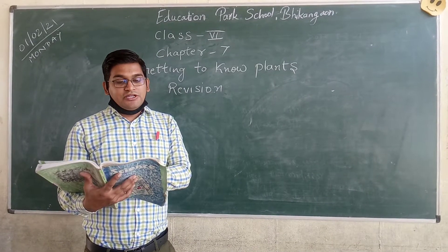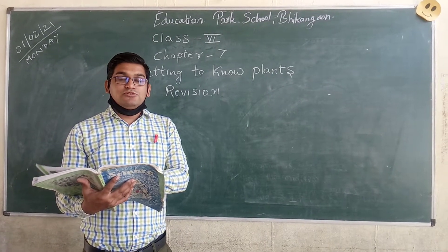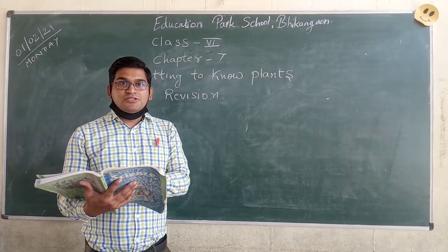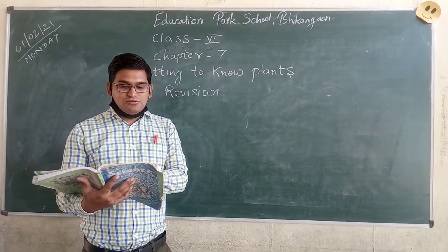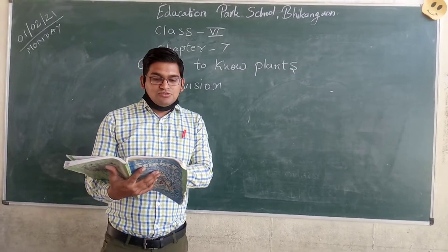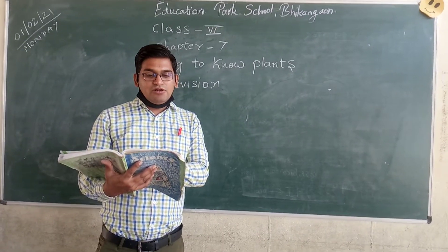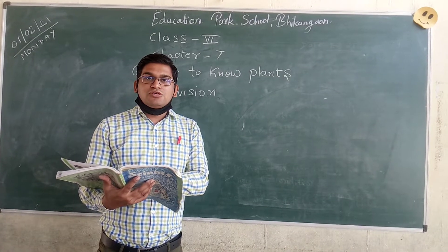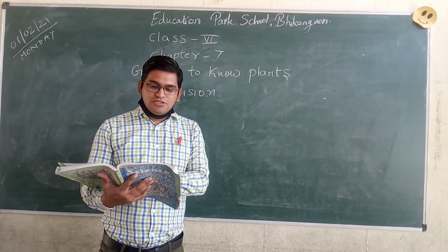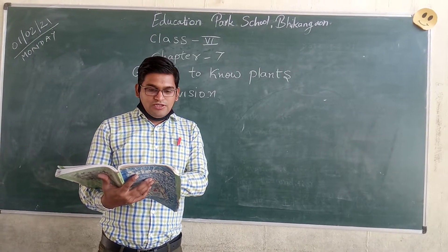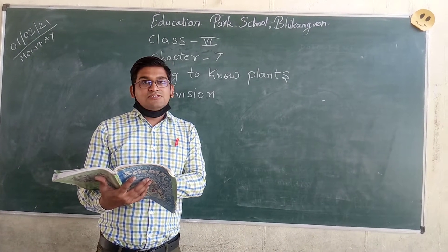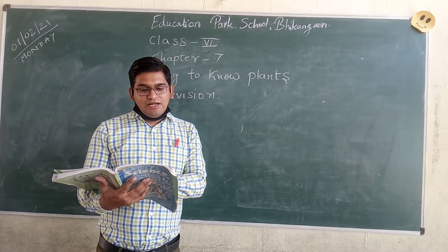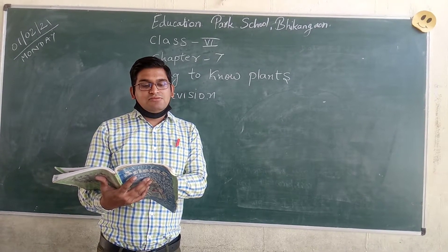Herbs have green and tender stems. They are usually short and may not have many branches. As you can see in figure 7.3a, sometimes plants develop branches near the base of the stem.